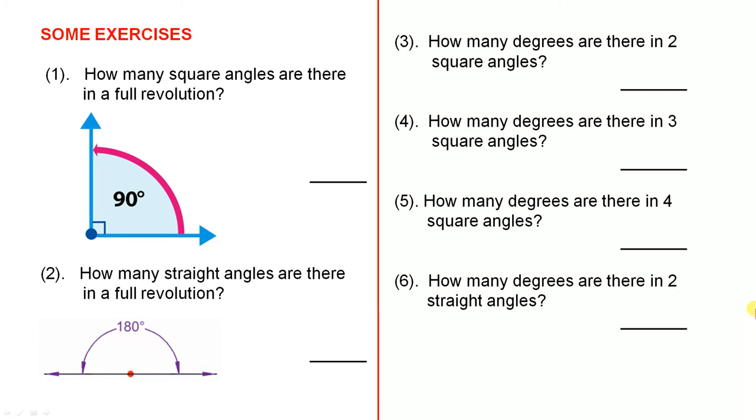Now let's go and have a look at the six answers. And here they are. So how many square angles are there in a full revolution? Four.